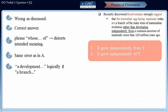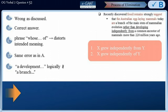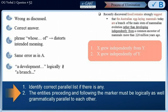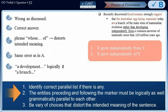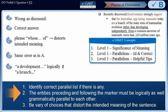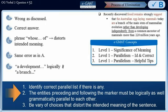This makes choice E incorrect. So as we found out earlier, choice B is the correct answer. For the takeaway: in sentences pertaining to parallelism, we must be able to identify the correct list and ensure that all entities before and after the marker are logically as well as grammatically parallel. We must also be wary of choices that distort the intended meaning. The concepts tested here are covered in e-GMAT Concepts: Level 1 — Significance of Meaning, Level 1 Parallelism — Identify and Correct, and Level 1 Parallelism — Helpful Tips.